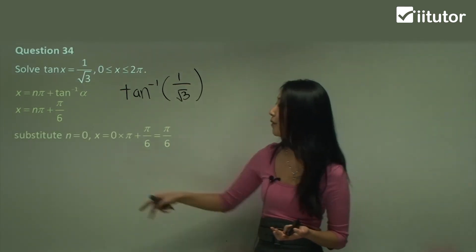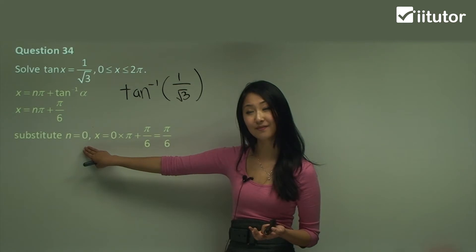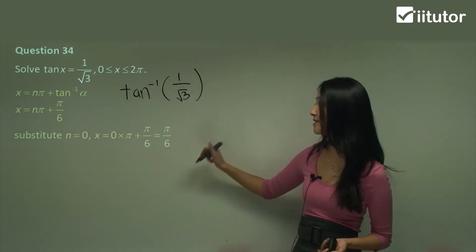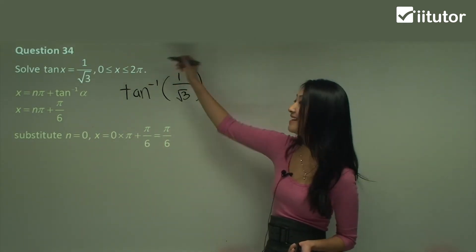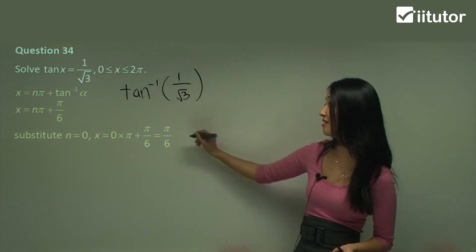This here is our general formula. Now we need to find out the actual values. Remember how I said always start with n equals zero? So we just have zero plus pi on six, which is pi on six. That does fit in there, so we know that's good.